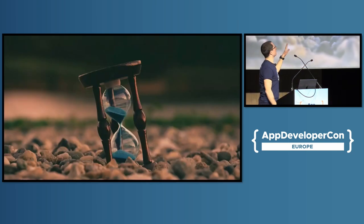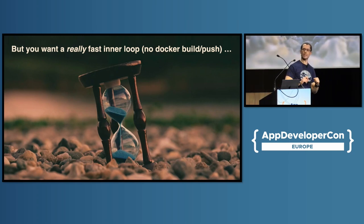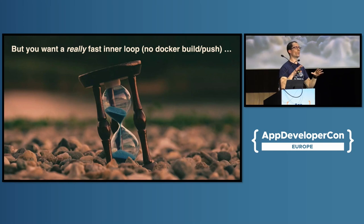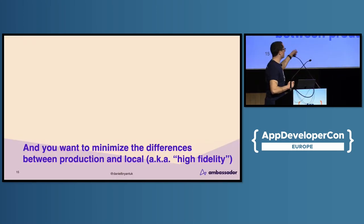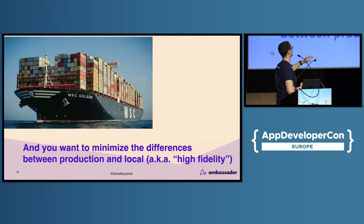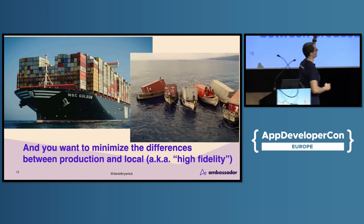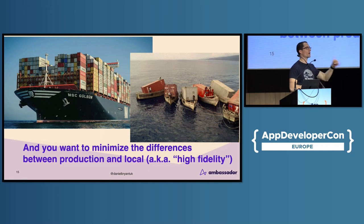Sometimes you want that really fast loop. You don't want to be doing Docker build, Docker push, or any kind of build and push even if it's automated. You want to be in that inner loop super fast. But you do want to minimize the differences between production and local — that's the tricky thing. You want high fidelity. We've all been there: production running looking good, local running not so good. The last two points are really about that trade-off of speed and fidelity — you're always trading off speed and fidelity.